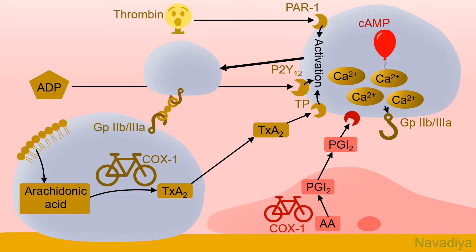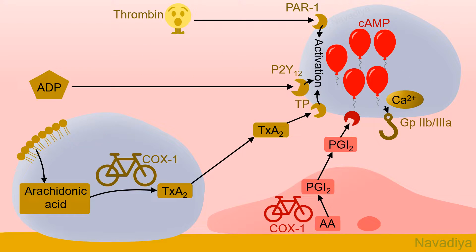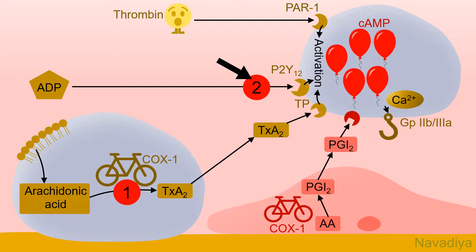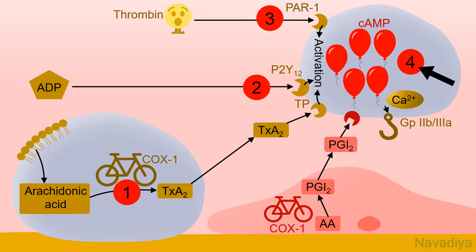Now let's move to the anti-platelet drugs. We have a variety of anti-platelet drugs acting on different steps in platelet plug formation: drugs inhibiting synthesis of thromboxane A2, inhibitors of ADP receptor P2Y12, protease activated receptor antagonists, phosphodiesterase inhibitors, and GP2B3A inhibitors. As these drugs act at different levels, we can get additive or synergistic effects by combining them. Let's see each group one by one.